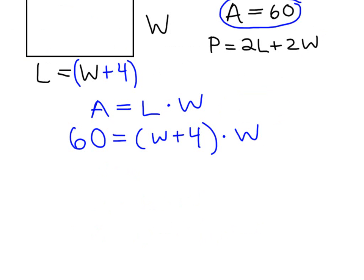Since it's a monomial, I'm not putting it in parentheses. Now this looks more familiar. This is almost a quadratic equation. We have to get it equal to 0 in order to be a true quadratic equation. So to get started, I'm going to distribute W to each term. So I have 60 equals W squared plus 4W.